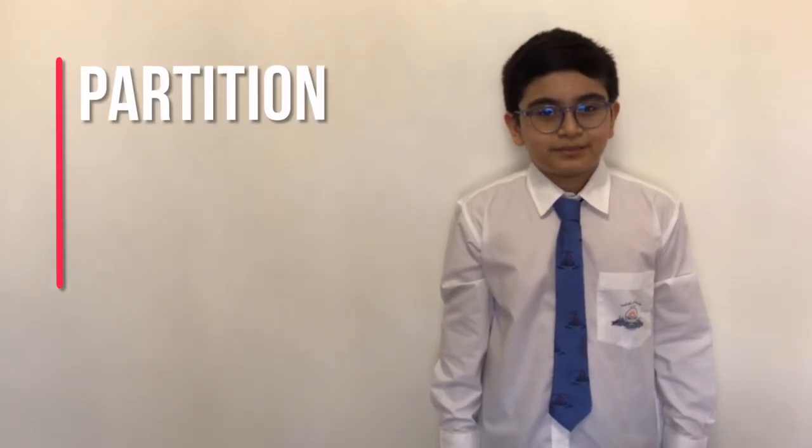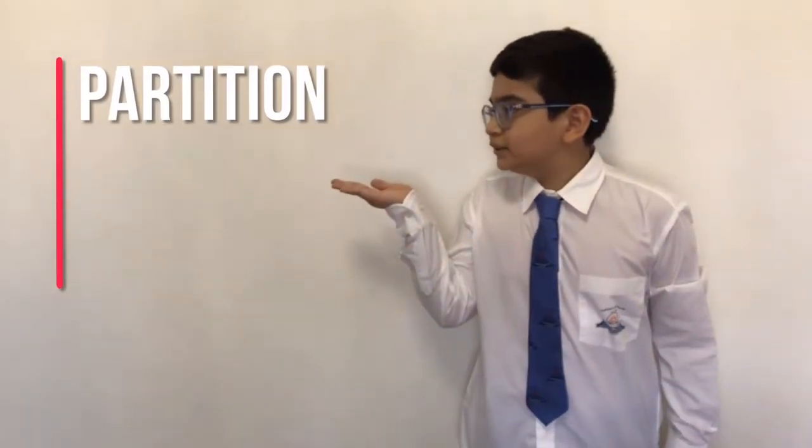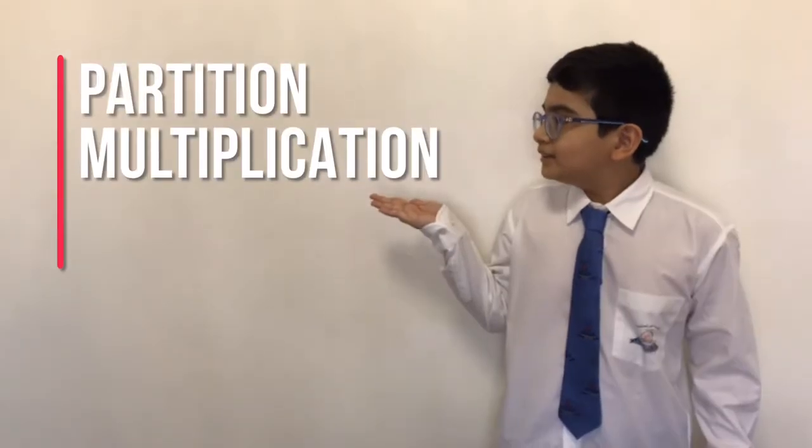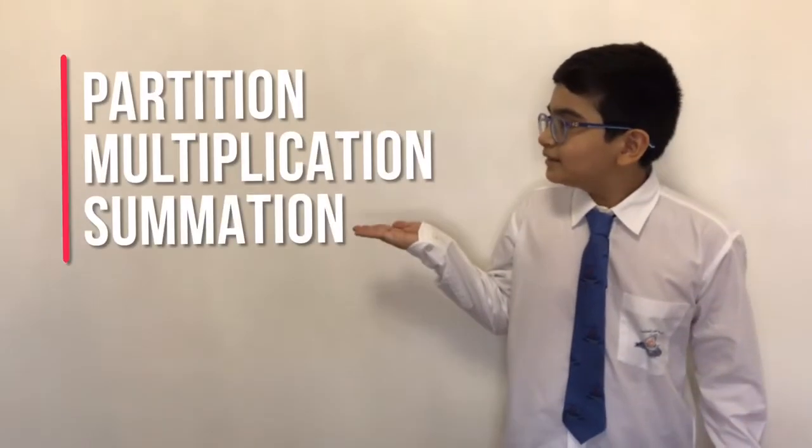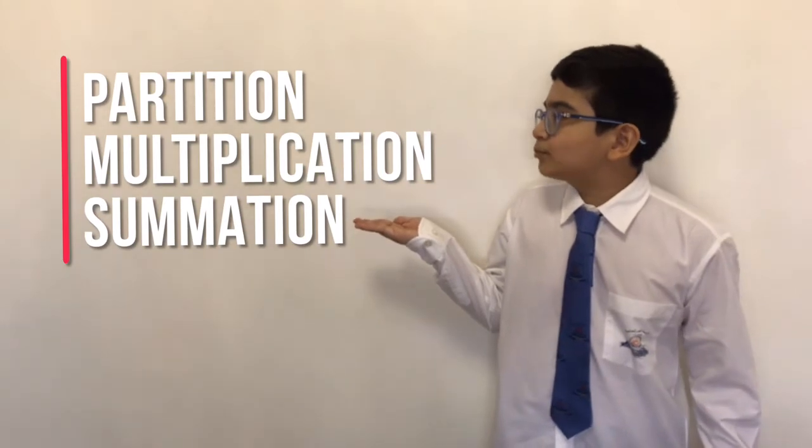The first step is partition of the double-digit number. Second step is multiplication. Third step is adding the products.